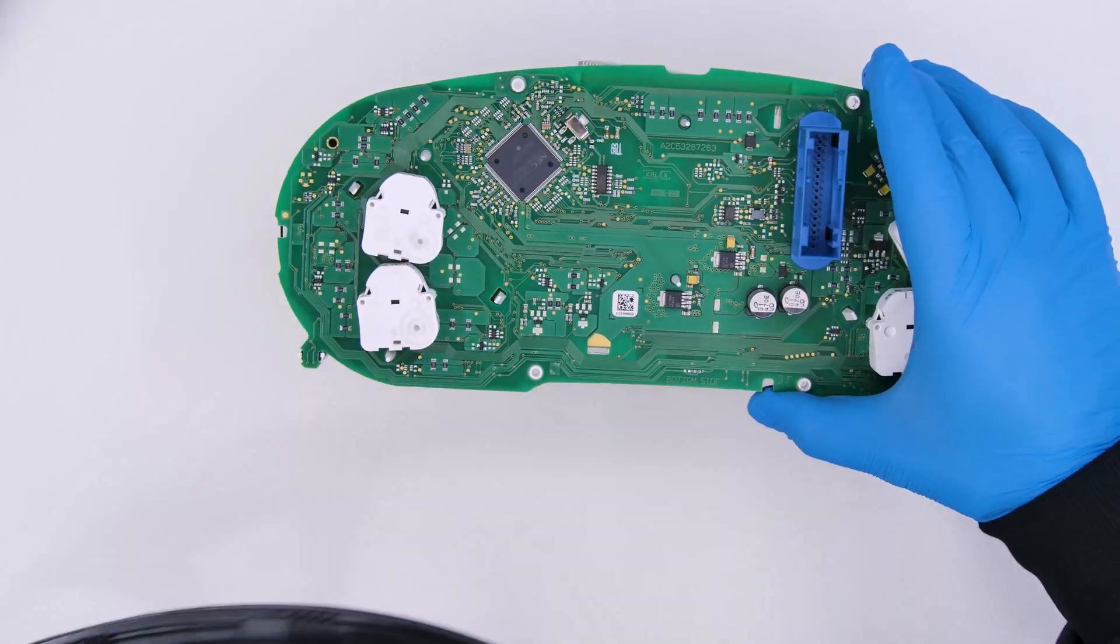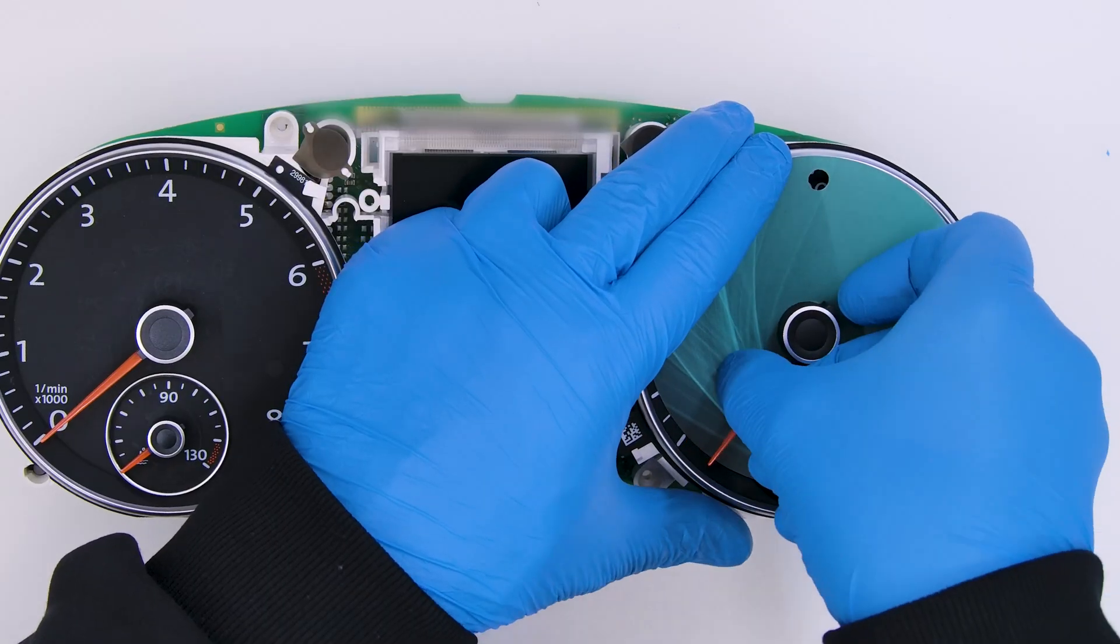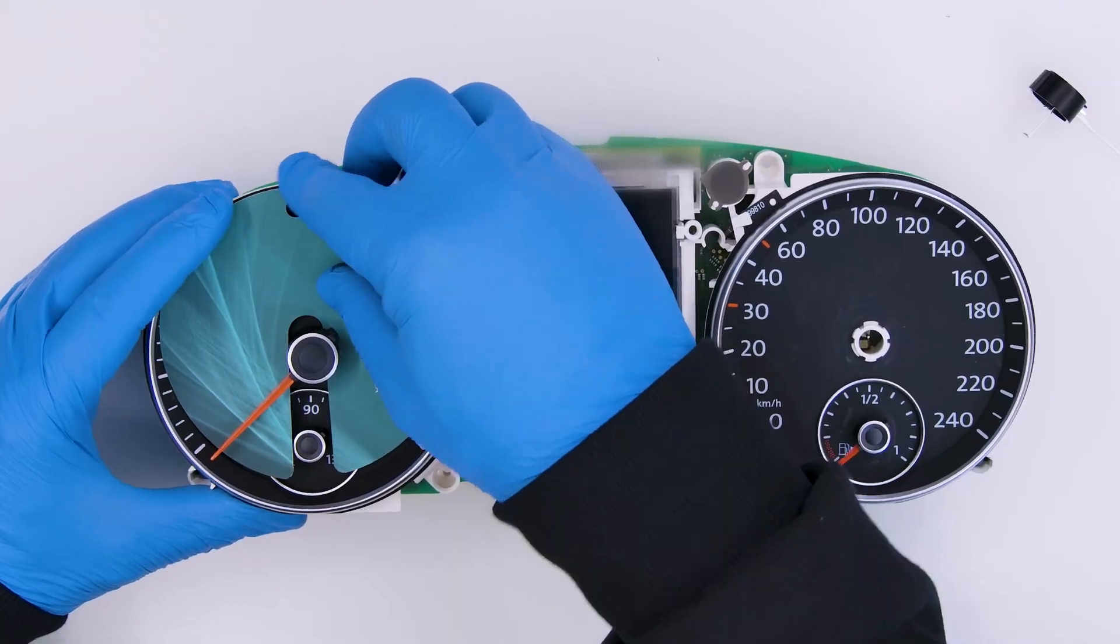Then take off the front cover as well. Fit the gauge face protective discs and take out the needles by slightly turning and pulling them.